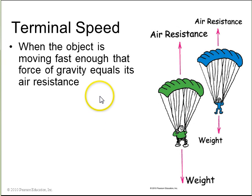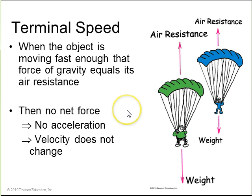Terminal speed is when the object is moving so fast that the force of gravity equals the air resistance. In this case, there's no net force, so no acceleration, so the velocity does not change. Here we have two parachutists, and they've both reached their terminal speed, where the weight equals the air resistance. Now, this guy's weight is more than this guy's weight, so the air resistance has to be more. So, the terminal speed for this parachutist is greater, because air resistance increases with speed. So, it'll fall faster in order to be at terminal speed.